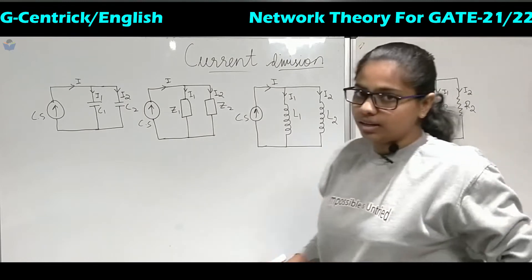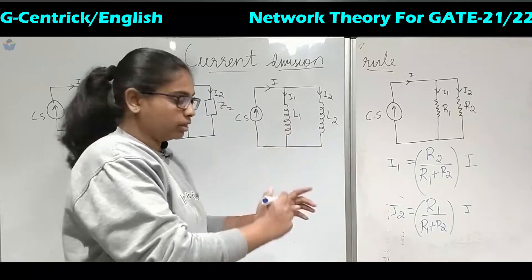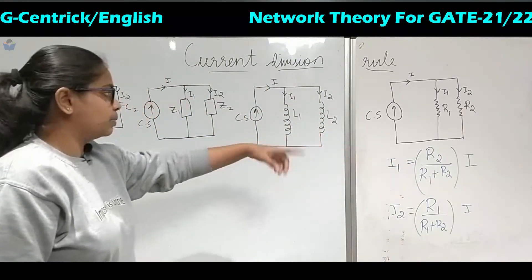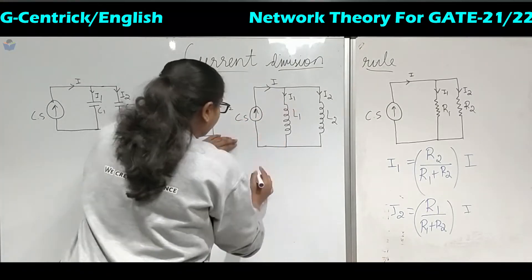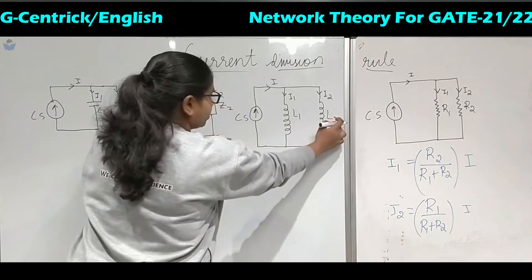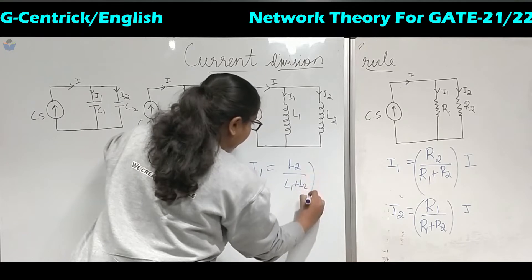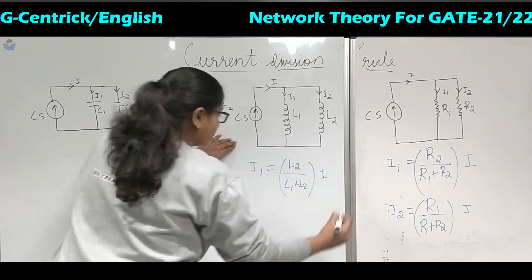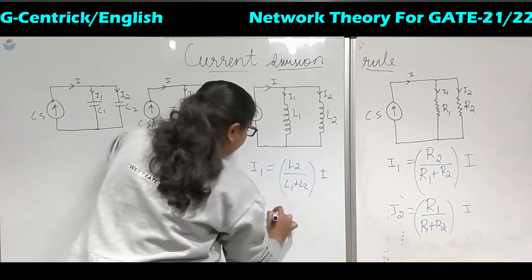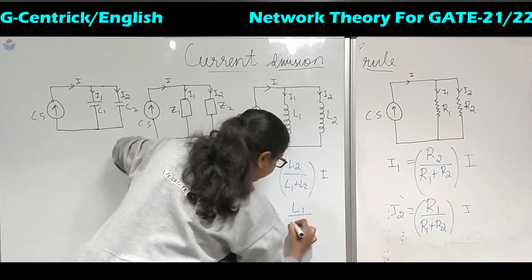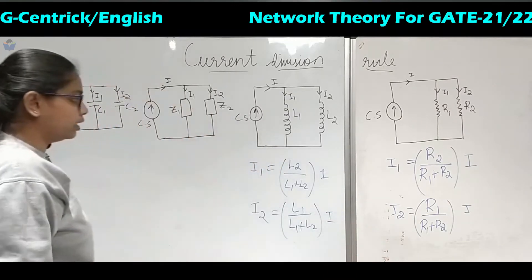Coming to the inductor — the same rule applies for resistors, inductors, and impedances; the equations will be the same, only resistors will be changed to inductors and inductors to impedance. If you want to calculate the value of I1 you take the opposite inductor value, that is L2, then L1 plus L2, multiplied with total current I. Similarly, if you want to calculate I2, take the value of inductor L1, then the sum of the two inductors, multiplied with the total current.